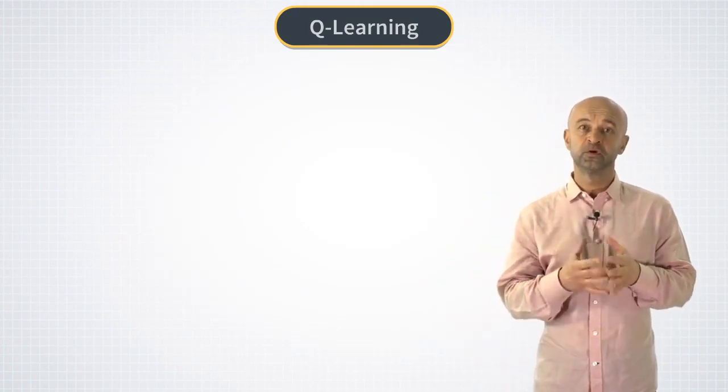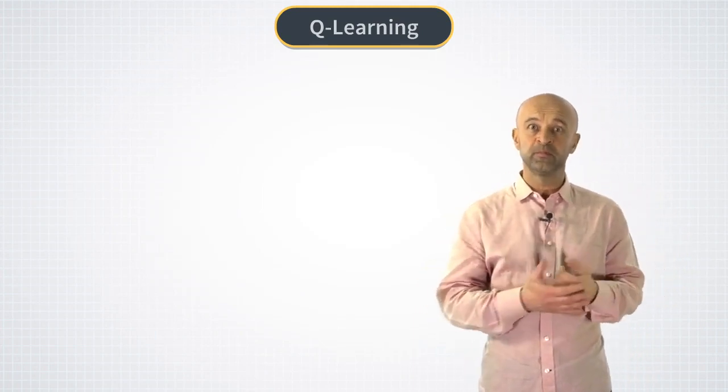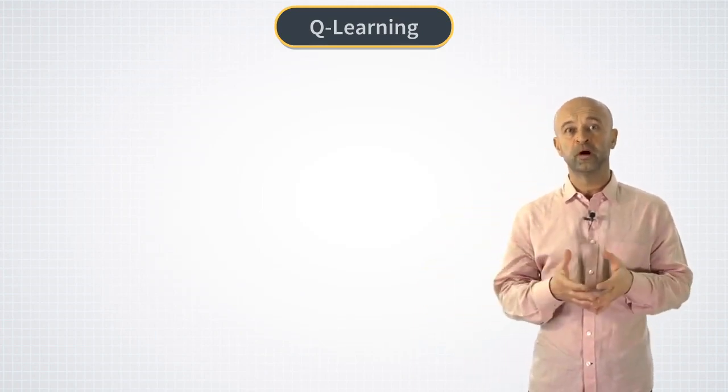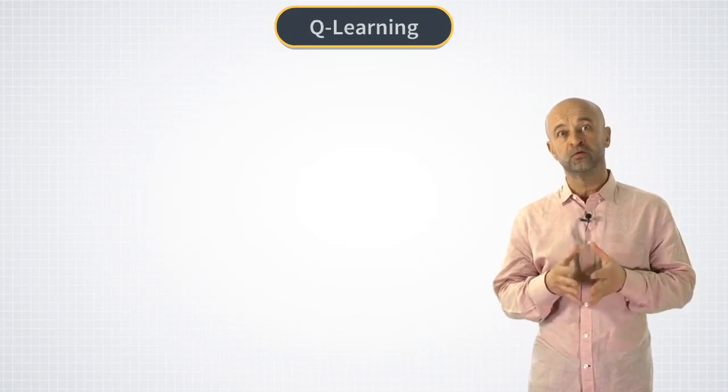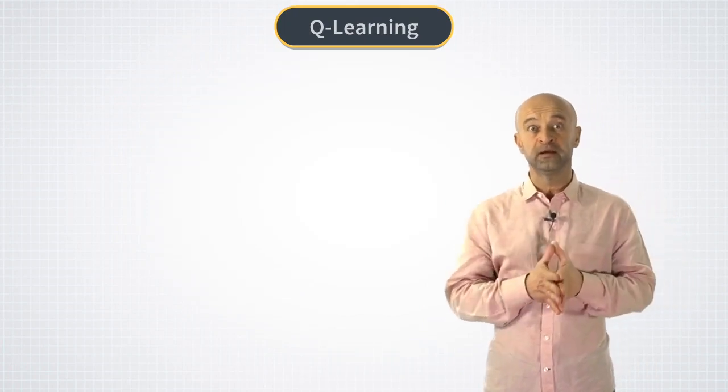In particular, Google's DeepMind became very famous before they became a part of Google when they published a paper where they showed how to use Q-learning at scale to teach a reinforcement learning agent to play Atari video games.